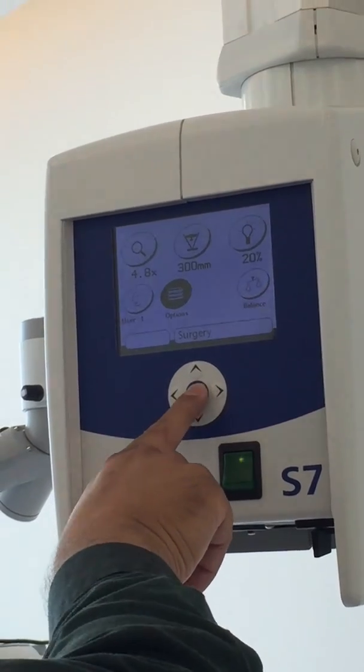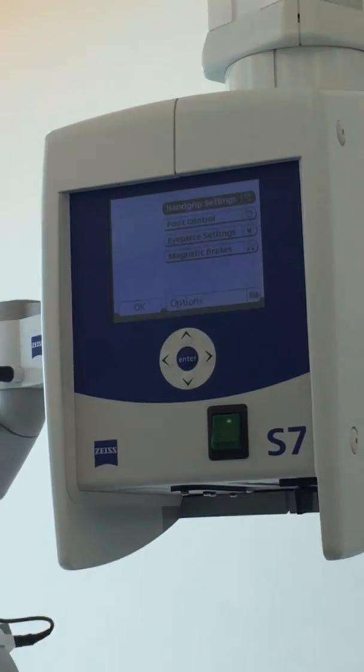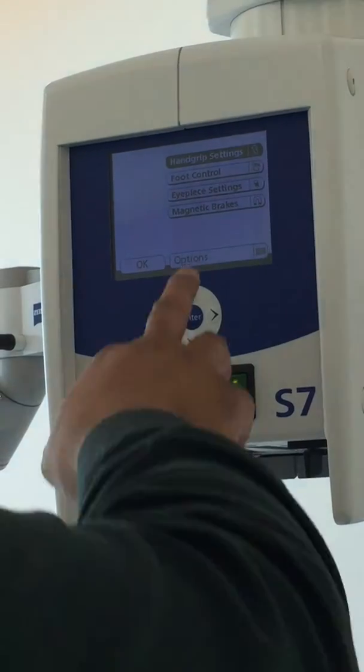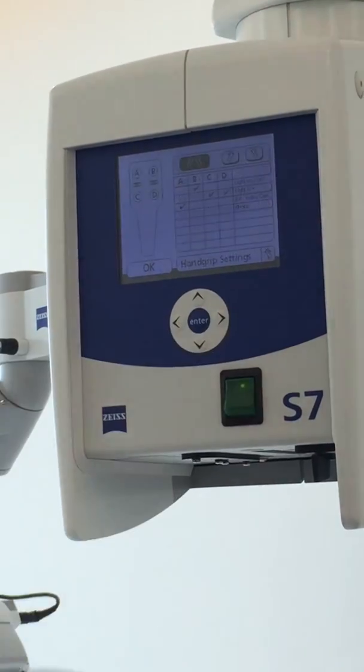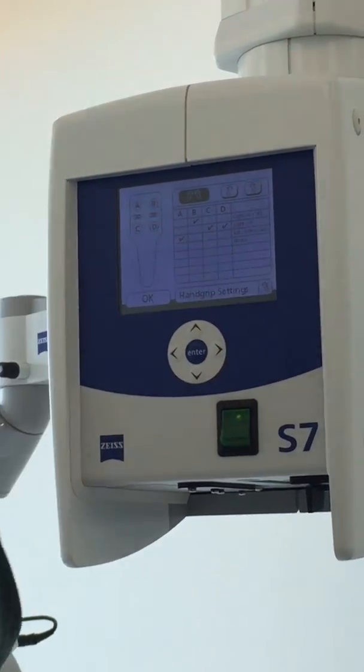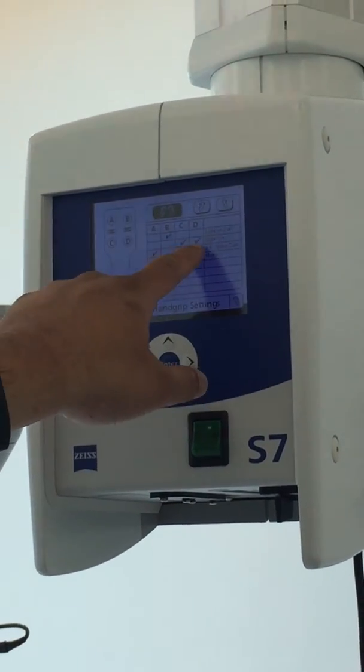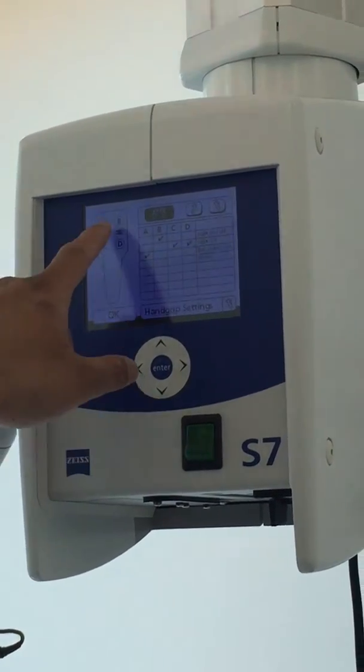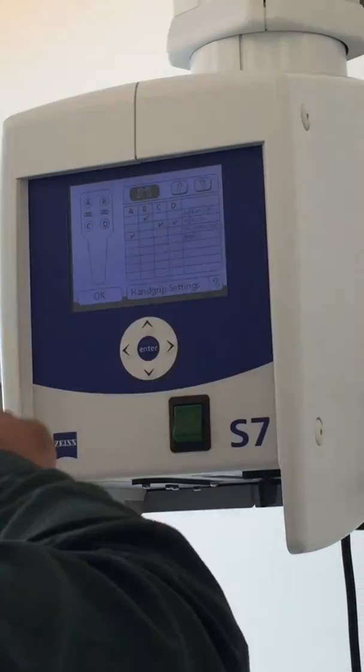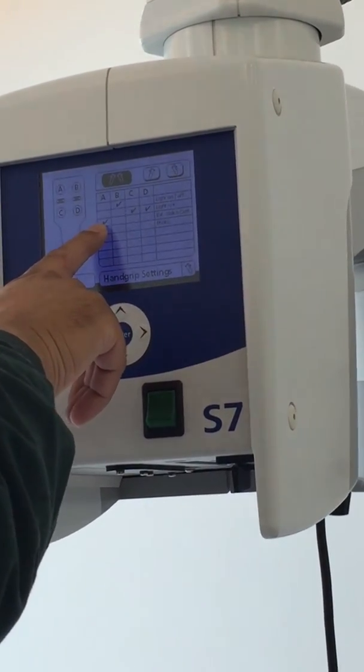And when you come to options. Here you find the settings for the hand grip foot control. It's usually not used for that. But hand grip settings are set here. You can see A and B are the lower buttons, upper buttons, C and D are the lower buttons. So you can see C and D are set for light increase, decrease. B is for light on and off. So you can come here and change. And C is for external video capture.